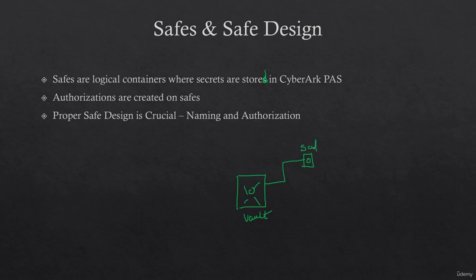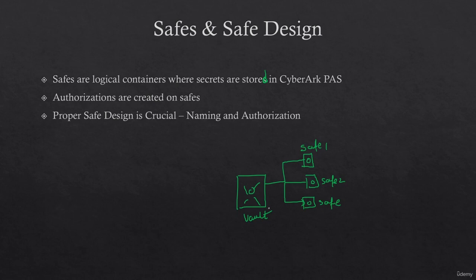Let's say this is safe one, this is safe two, and this is safe three. We'll just take three for now — you can have hundreds or even thousands of them.